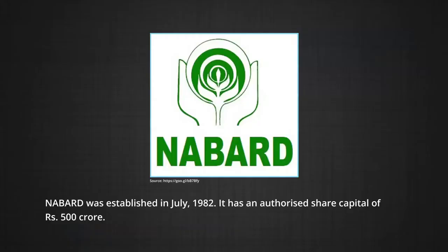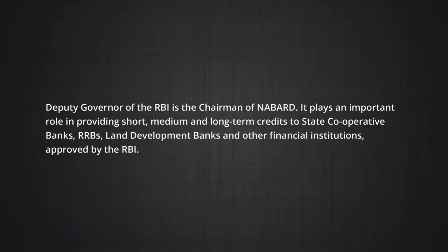NABARD — the National Bank for Agriculture and Rural Development — was established in July 1982 with an authorized share capital of rupees 500 crore. The RBI contributed half the share capital while the other half was contributed by the Government of India. The Deputy Governor of the RBI is the chairman of NABARD.